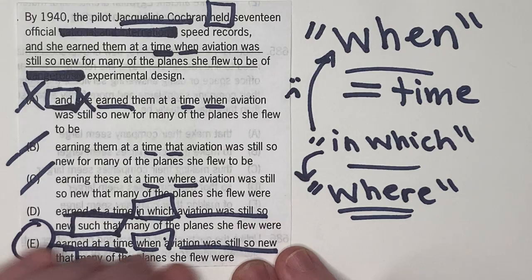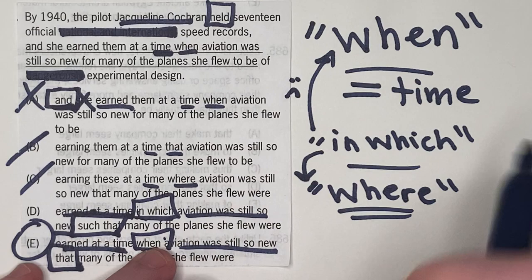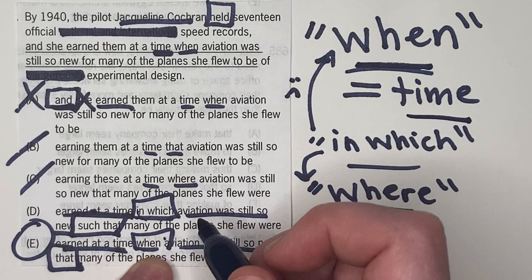And our correct answer here is E for a few reasons. You could make the argument that it's a time in which aviation was still so new, but it's a lot clearer to say a time when. Again, when on the GMAT literally means time. And so E is just doing such a great job of clarifying that for us.